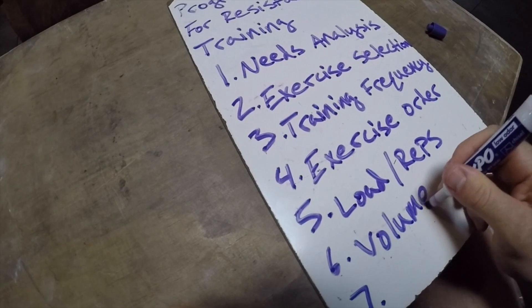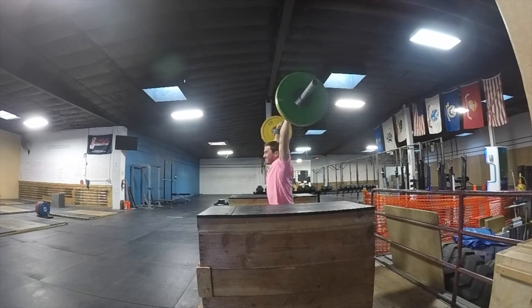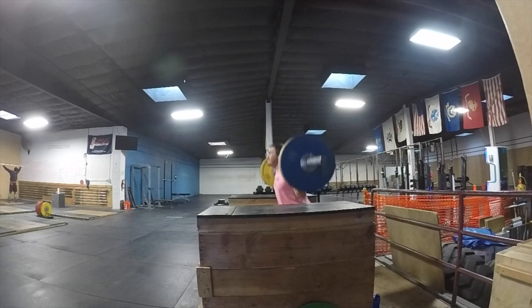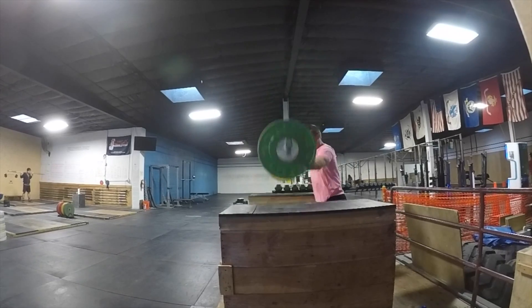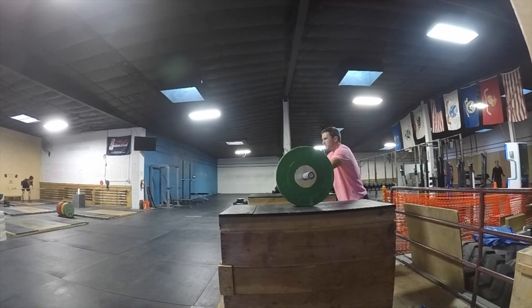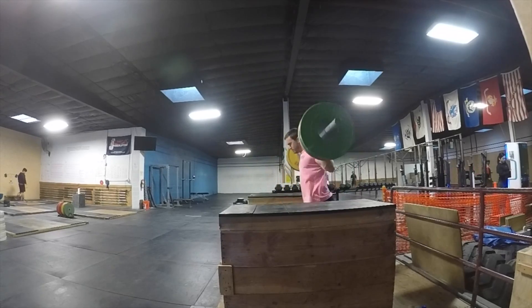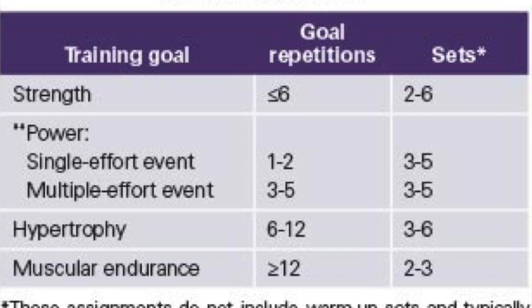Step six is volume. Volume and load are inversely related — as volume increases, intensity decreases, and vice versa. Volume can be assessed two ways: the volume load method (weight lifted times reps) or the rep volume method where you simply count the number of reps. For sets — not including warm-up sets — prescribe two to six sets for strength, three to six for hypertrophy, two to three for endurance, and three to five for power.